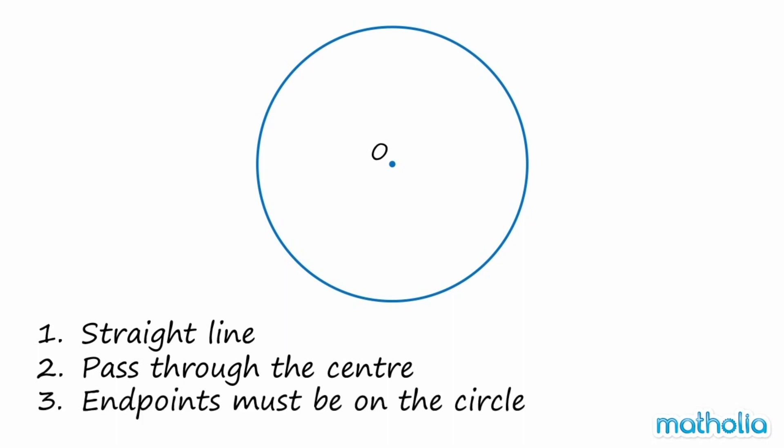the endpoints must be on the circle. This circle has a centre point, O. Let's draw a straight line that passes through this point and has endpoints on the circle.